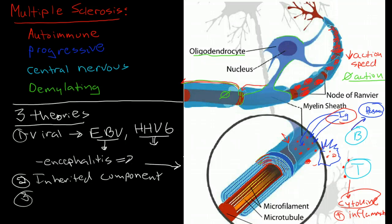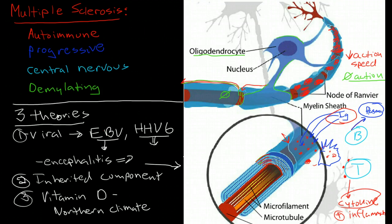A third theory is that there is a link to vitamin D deficiency. Now this theory is supported by the fact that the disease is much more common in northern climates. So like Greenland, it is extremely common. Canada, Europe, and North America, it is fairly common. And in Africa and Central America, it is much more rare. So the reality is it may be a combination of these three factors or it may be a different factor in different individuals.